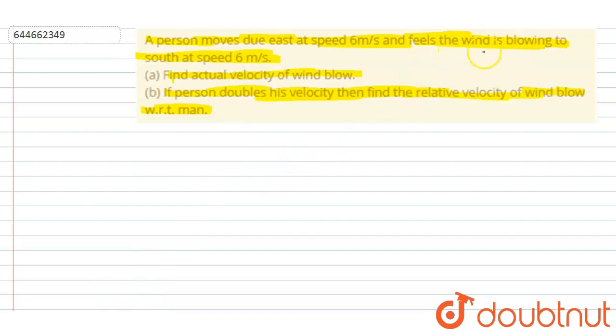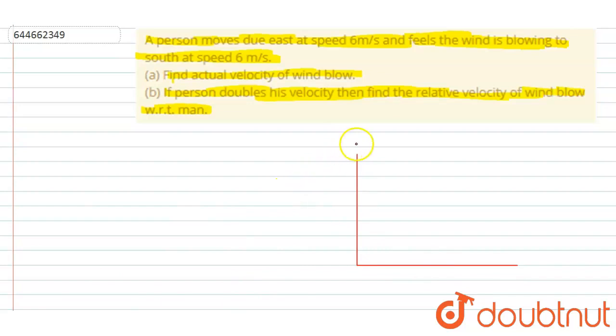If you see, the person is moving due east at six meters per second and he feels the wind is blowing towards south. So I take the north direction as y and the east direction as x.